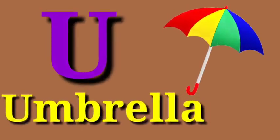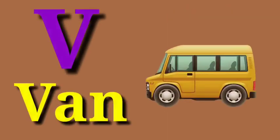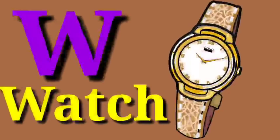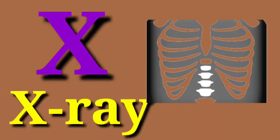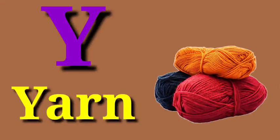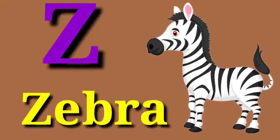U for umbrella. V for van. W for watch. X for xmas tree. Y for yellow. Z for zebra.